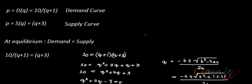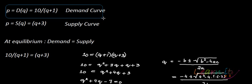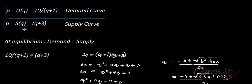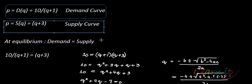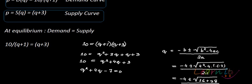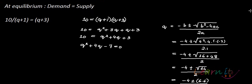In this question we will try to find out how to calculate consumer surplus and producer surplus. We are given the demand curve P = 10/(Q+1) and the supply curve P = Q+3. At equilibrium, demand is equal to supply.